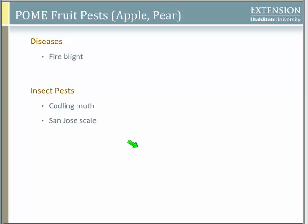I wanted to talk about a couple of pests broken out by crop. We'll start with apple and pear with three options: fire blight, codling moth, and San Jose scale.